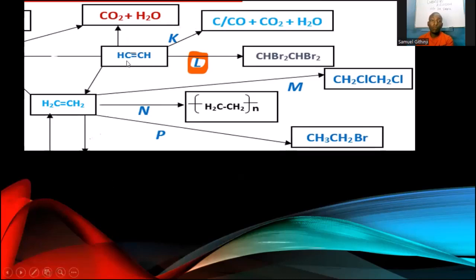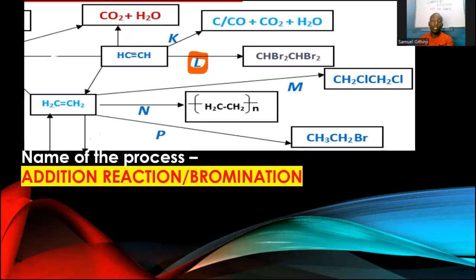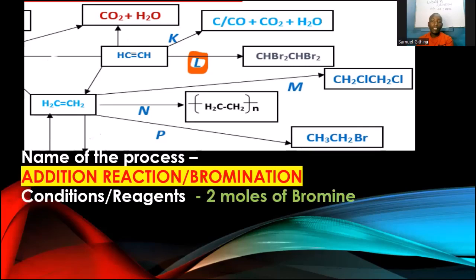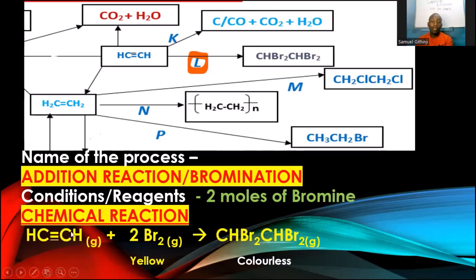Process L — ethyne reacting with bromine to form a product with two bromine atoms on each carbon (CHBr₂-CHBr₂) — is bromination, an addition reaction. Two moles of bromine are required to open the triple bond all the way to a single bond. The bromine is yellow-brown in color; it decolorizes to form a colorless product. This is an important qualitative test to distinguish between alkynes, alkenes, and alkanes.